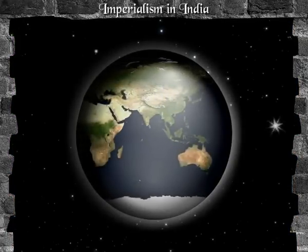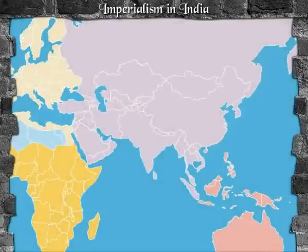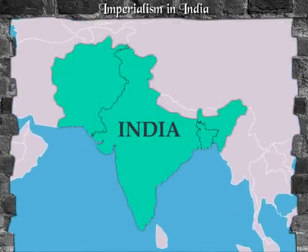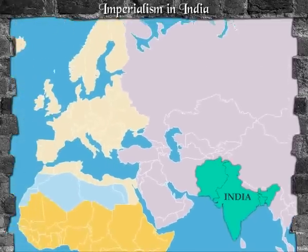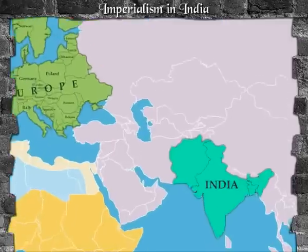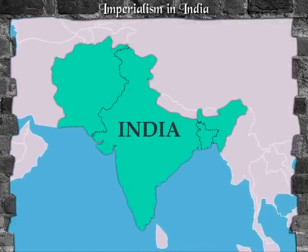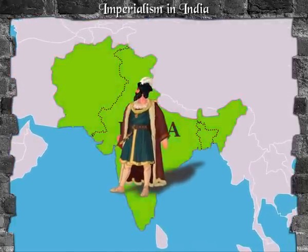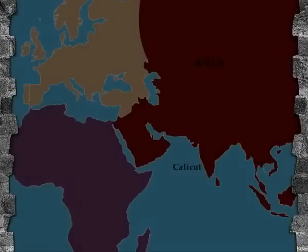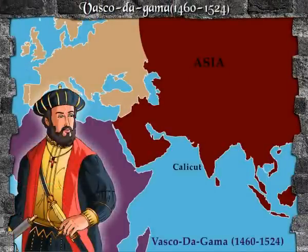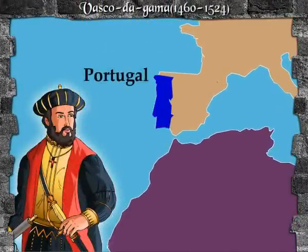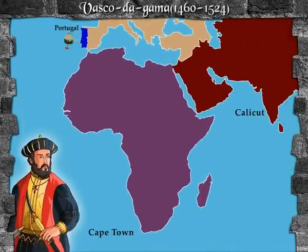Imperialism in India. India, a strategically placed subcontinent, was the first to fall prey to the Europeans. The credit for this can perhaps be attributed to the great Portuguese sailor Vasco da Gama. Vasco da Gama (1460–1524) was a Portuguese explorer and one of the most successful in the age of discoveries.